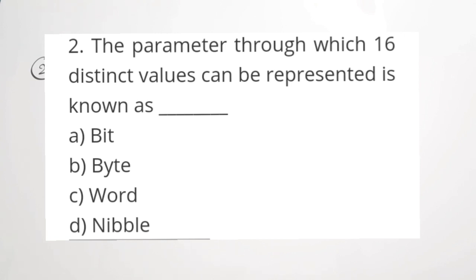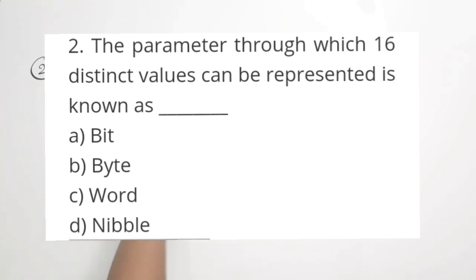What is the 16-bit representation? That is the meaning of the question. Option A: bit — bit means it consists of only one number, either 0 or 1 in binary. Option B: byte — byte means 8 digits, 8 ones or zeros combinations. Option C: word — that is the correct answer, word means 16. Option D: nibble — nibble means 4 bits.